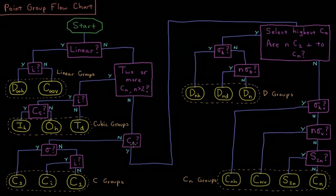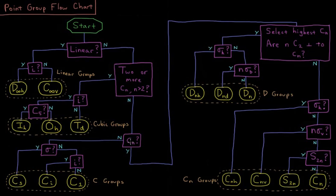If it does have a principal axis, Cn, whether it's C2, C3, C4, C6, etc., then we go down here. Now we've got to separate whether it's a dihedral group or a cyclic group. So we're asking ourselves, this highest Cn that we have, our principal axis that we determined we have here,